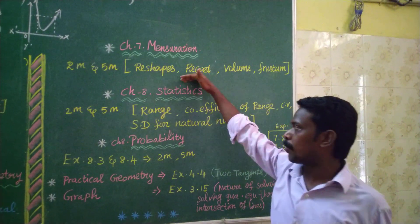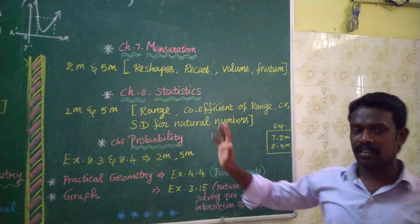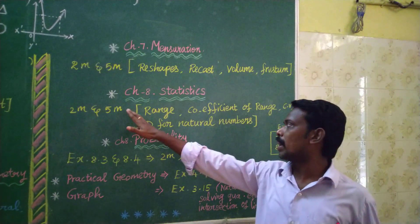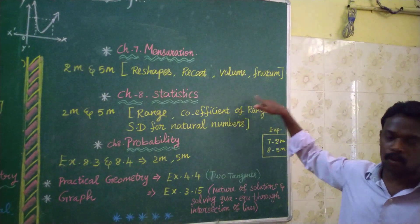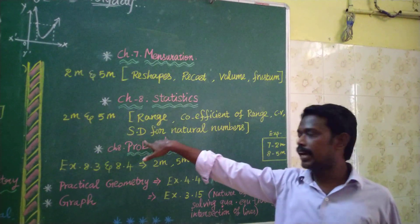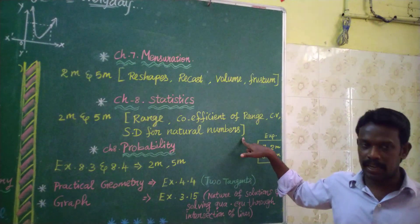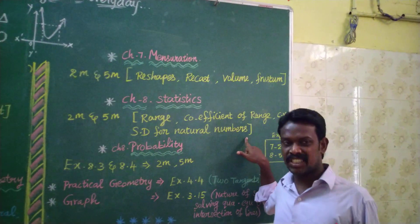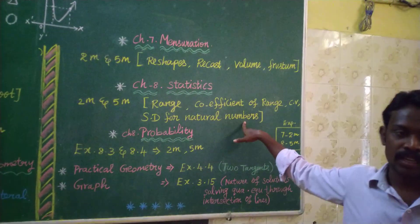Chapter 8 is Statistics. What we expect is maximum expected questions. In the range of 2-mark and 5-mark questions. It is standard deviation for natural numbers — standard deviation for 8 natural numbers — this has a good chance of appearing.